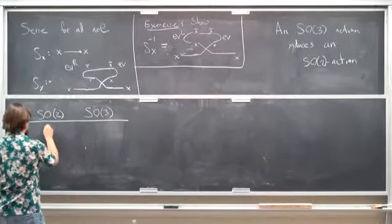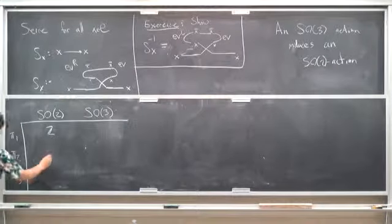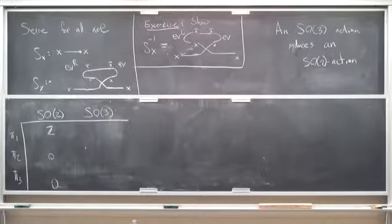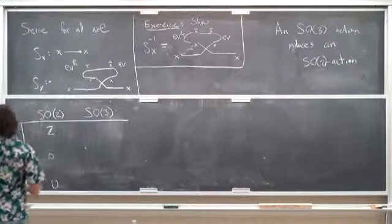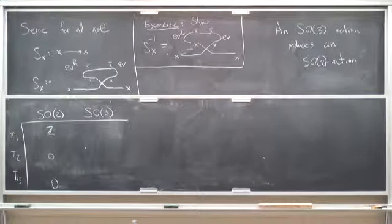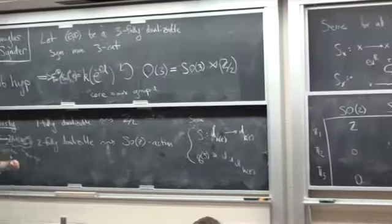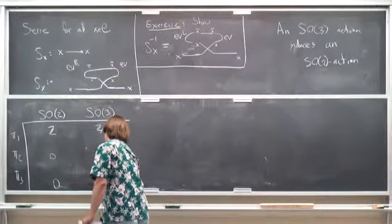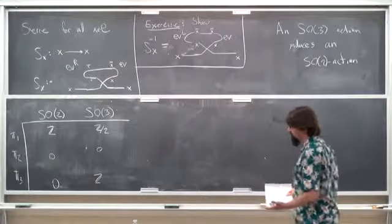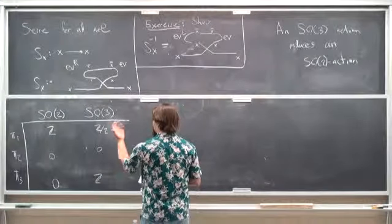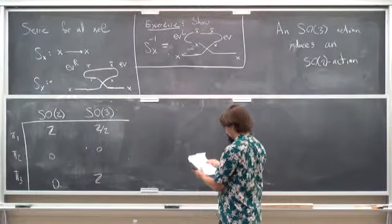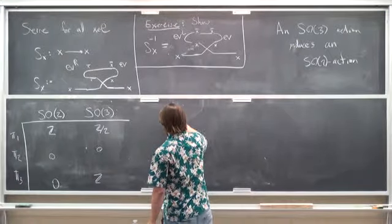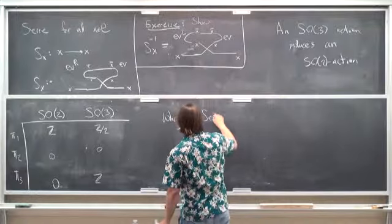SO2 is really easy: it has Z for its fundamental group and then that's it; it's a K(Z,1) and the other homotopy groups are zero. This pi1 really does correspond to the Serre automorphism — it's a loop at the identity element, and this loop goes to a natural automorphism of the identity functor, which is the Serre automorphism. But in SO3 we have Z mod 2 for pi1, then we have a Z for pi2. So even at this first level we see new phenomena: we expect the Serre should be order 2.